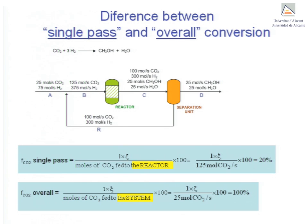Single-pass and overall conversion differ exclusively in the denominator. Single-pass conversion refers to the moles of CO2 fed to the reactor, whereas overall conversion refers to the amount of CO2 fed to the system. Same numerator, different denominator. The extent of reaction, ξ, is the same regardless of which conversion is being referred to, as explained in another lecture.